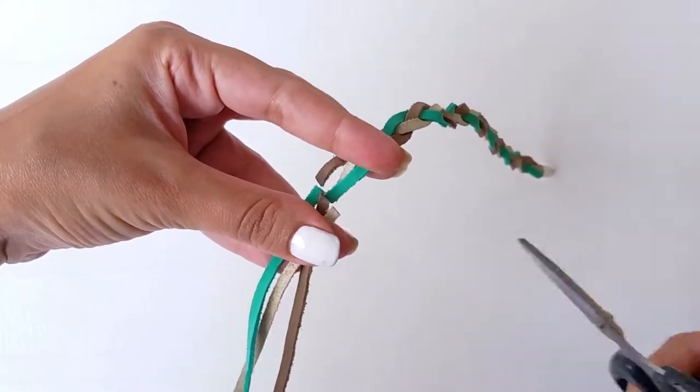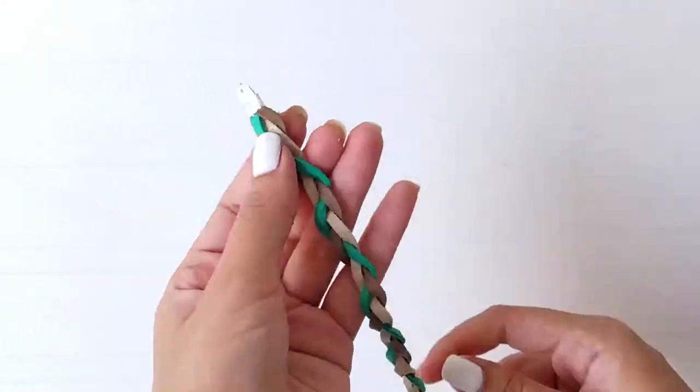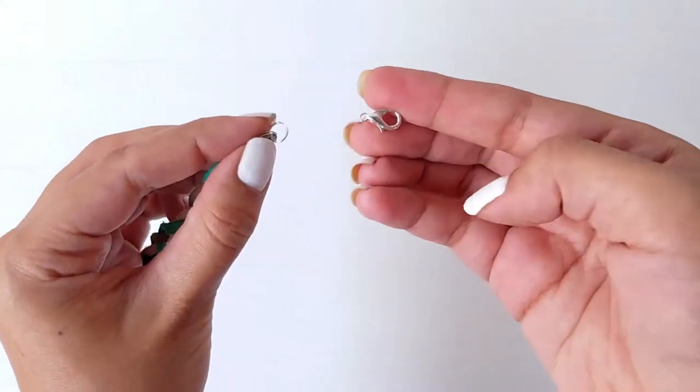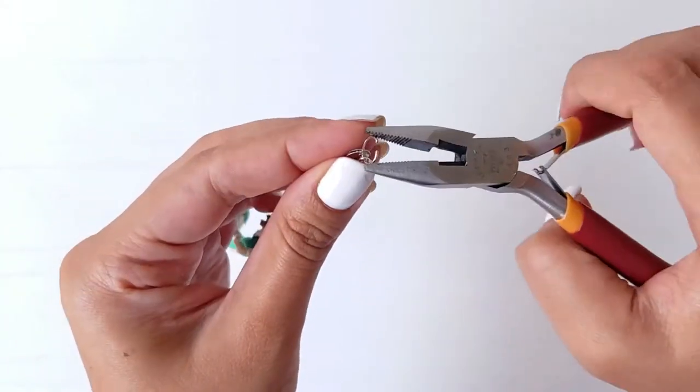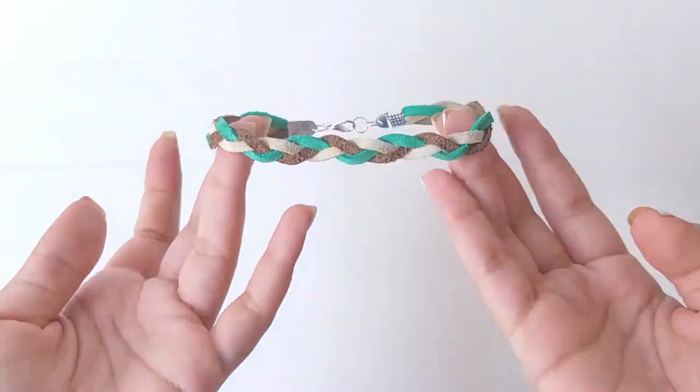Clamp the other end of the bracelet as well and attach two jump rings on that end and a hook on the other. Voila, you're all set to rock this tricolor braided bracelet.